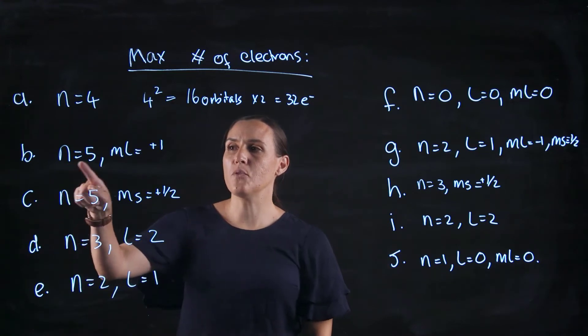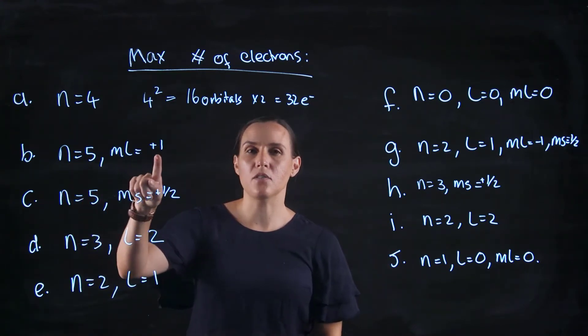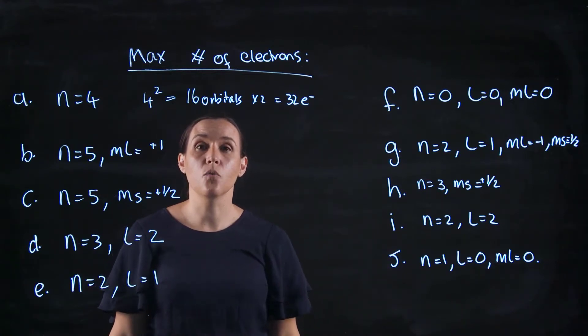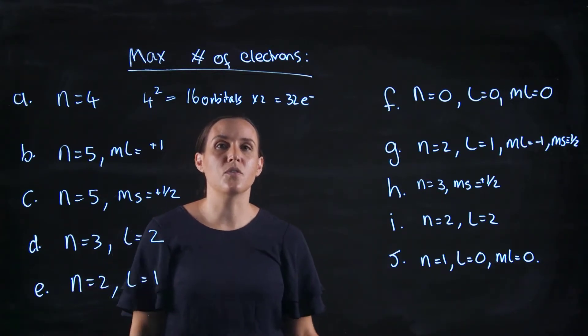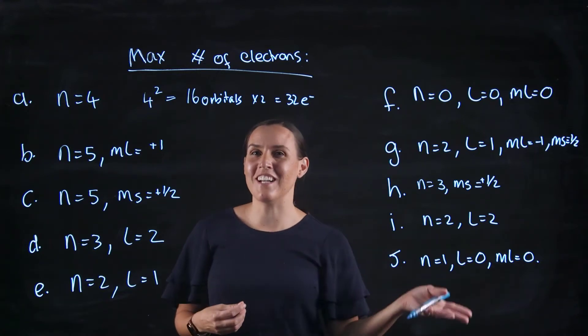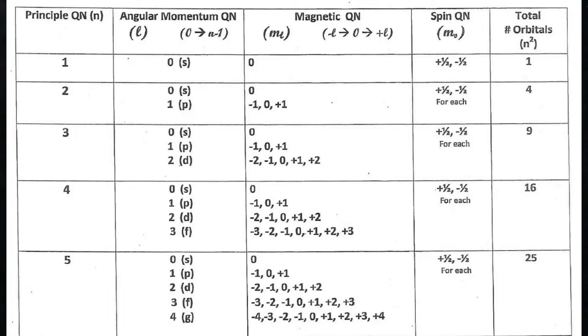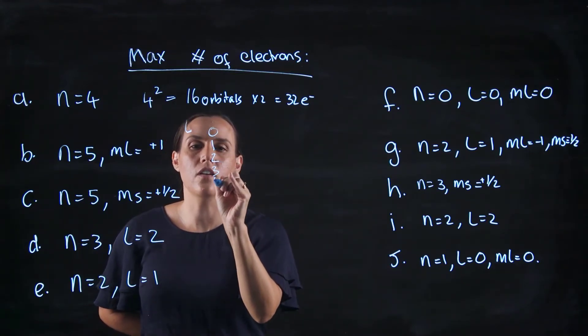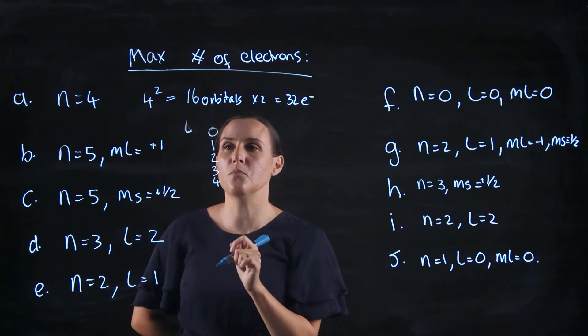So now we've got n equals 5 and ml equals plus 1. So you need to think if n equals 5, how many mls would equal plus 1? So it's memorizing that table that's in another video, or you could quickly kind of scribble it out. So I'll scribble it out. If n equals 5, our possible l values are 0, 1, 2, 3, 4.